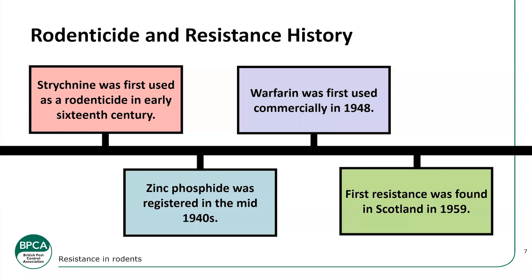Detection of resistance to first-generation anticoagulants was found in 1958 on a pig farm in Scotland, and by 1962 it was confirmed through field trials and lab tests that there was resistance in certain areas to all first-generation anticoagulants. It didn't take long — only a few years from being brought to market to finding resistance. A lot of this was due to poor practice and not dealing with infestations properly.